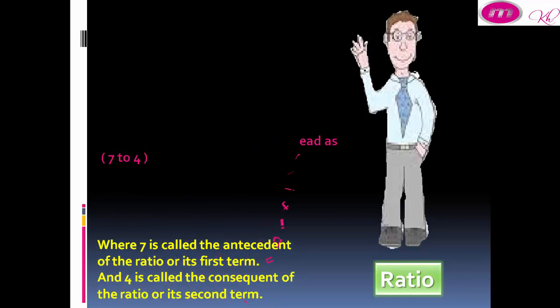Where 7 is called the antecedent of the ratio or its first term, and 4 is called the consequent of the ratio or its second term.